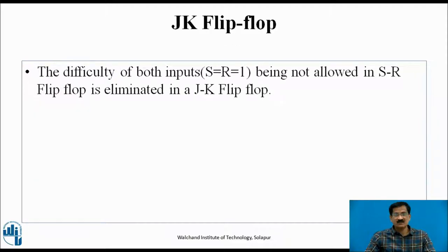Regarding the JK flip-flop: in our earlier discussion, we covered SR flip-flops, in which when S and R are both equal to 1, this condition is not allowed — the output is uncertain or invalid. This difficulty is overcome in the JK flip-flop.